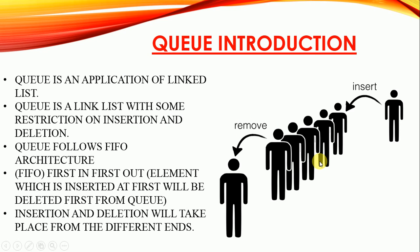Let us start with an introduction to Queue. Basically, a Queue is also an application of a linked list. A Queue is a linked list with some restrictions on insertion and deletion. A Queue follows FIFO structure — First In, First Out — meaning the element inserted first will be deleted first. Consider this queue: the person standing at the front will be removed first, and any new person will be inserted at the end.